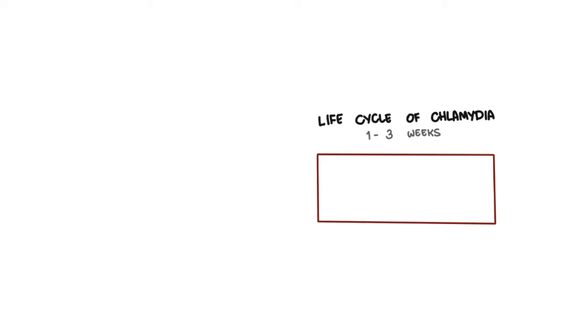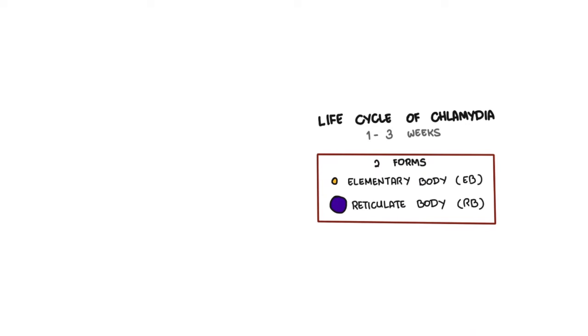The life cycle of chlamydia has two major phases that occur over one to three weeks, the incubation period. It is important to note that the two forms of the bacteria include the elementary body, which is infectious, and the reticulate body, which is metabolically active and can reproduce, but is not infectious.